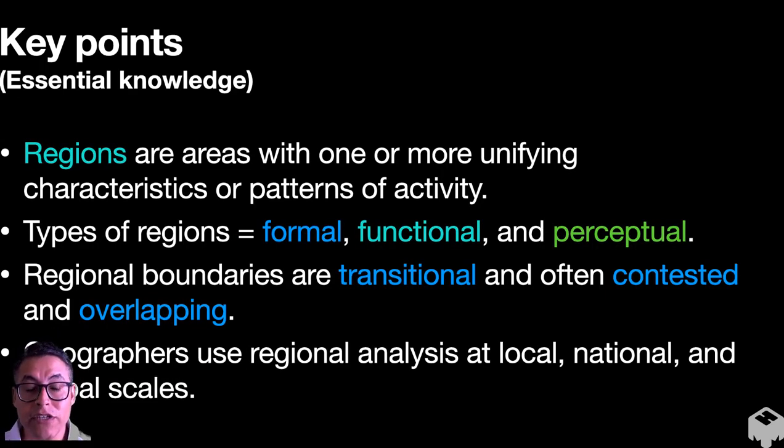So what are the key points of this lecture? These are the things that you should really know by the time you finish. Number one, regions are areas with one or more unifying characteristics or patterns of activities. Two, the types of regions there are: formal, functional, and perceptual. These are the ones that geographers use. And regional boundaries can be transitional. They can be contested or debated and they can be overlapping. That means that they're not finite. They're not well-defined in some cases.